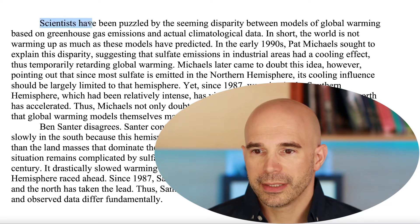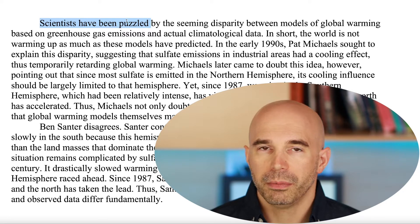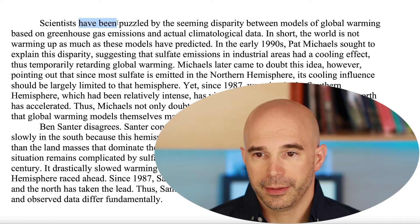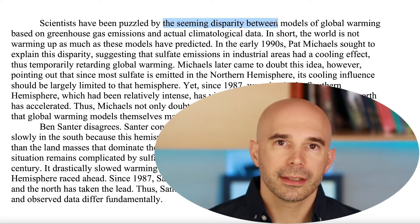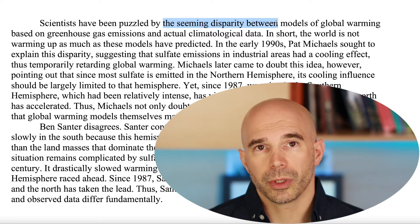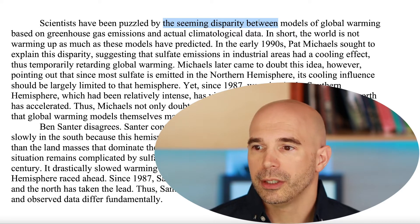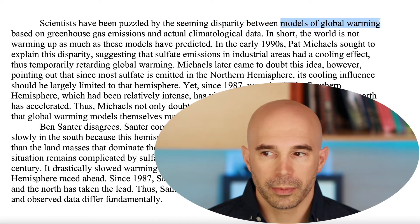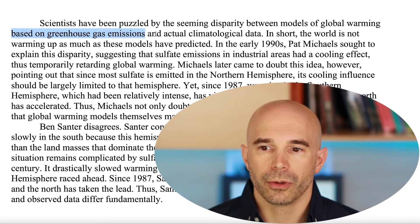"Scientists have been puzzled" — and that's the main clause of this first sentence. Scientists have been puzzled by something. So we've got a subject and we have a verb. Now, what have they been puzzled by? The seeming disparity between two things. How do I know that it's two things? Well, because if it was more than two things, you couldn't use the word "between" — you'd use the word "among." So it's two things. And I'm prepared now to read what those two things are. Thing number one is models of global warming based on greenhouse gas emissions.